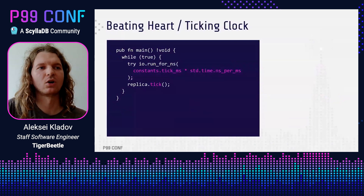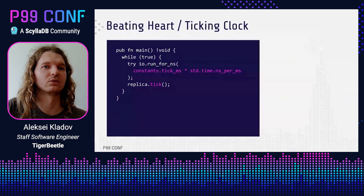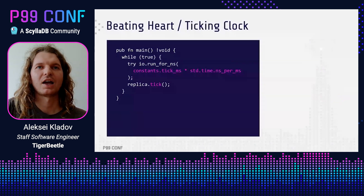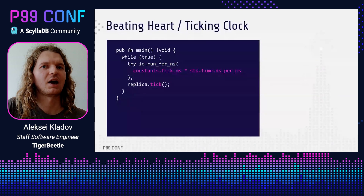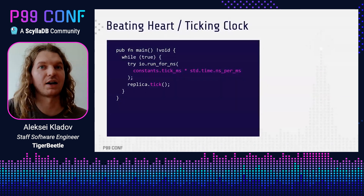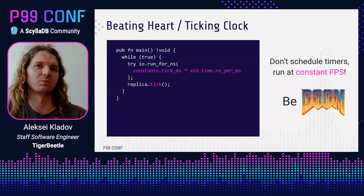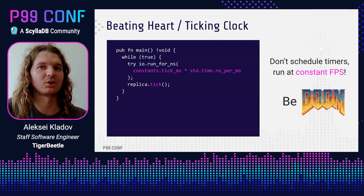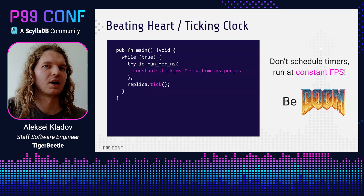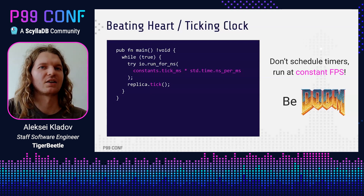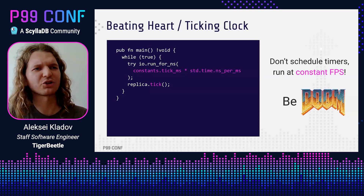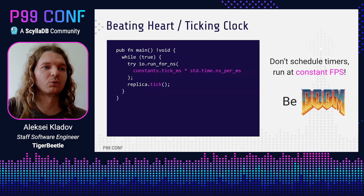Now let's look at the heart of the system, where everything happens. This is the main loop of TigerBeetle, which literally drives everything. There are two interesting aspects about this code. First, we are running with discrete time. Every 16 milliseconds, we call the tick function on a replica. A replica tracks the number of ticks internally and uses this number of ticks to drive timers rather than actual physical timing. This is how a game could be run. The benefit here is that pushing time into the system is much easier to virtualize and to mock than using setTimeout-shaped APIs. The drawback is that the time is not precise — you only get 16 millisecond resolution. But you actually don't need higher resolution for timeouts; on the contrary, you would love to randomize them or add exponential backoff.